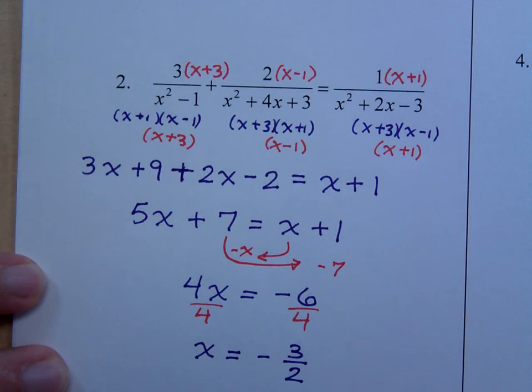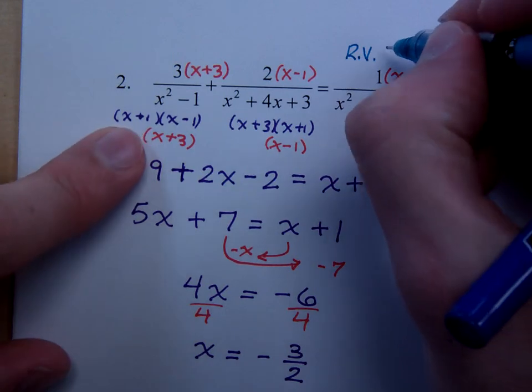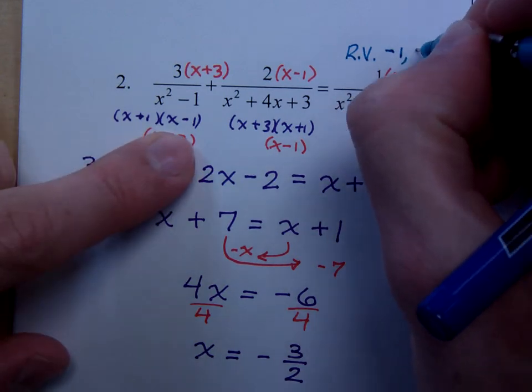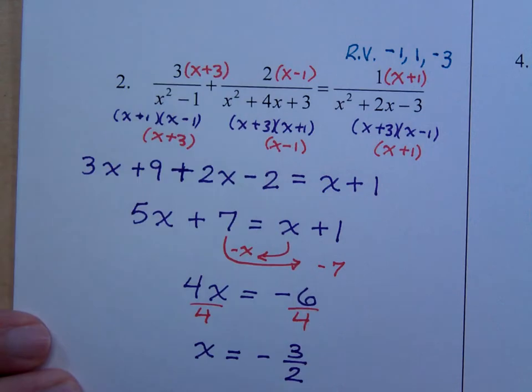If you check the restricted values that we had in this problem, you couldn't have x equal to negative 1, positive 1, or negative 3. We didn't have any of those as a solution, so this guy should be okay. Just make sure you watch your signs, distribute correctly, and you'll be right as rain.